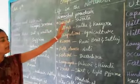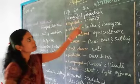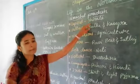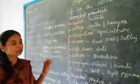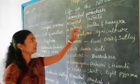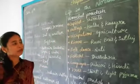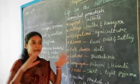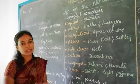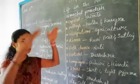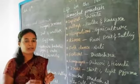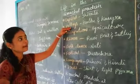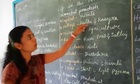Himachal Pradesh. The capital of Himachal Pradesh is Shimla. Shimla is one of the most beautiful places in India. Himachal Pradesh has beautiful valleys including the Kullu Valley and the Kangra Valley.